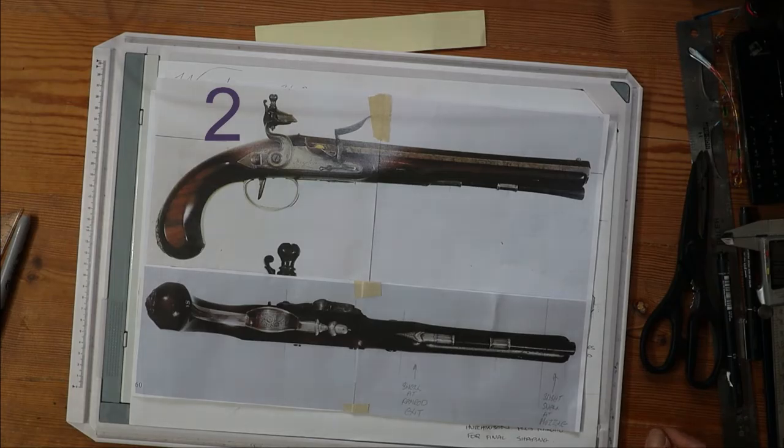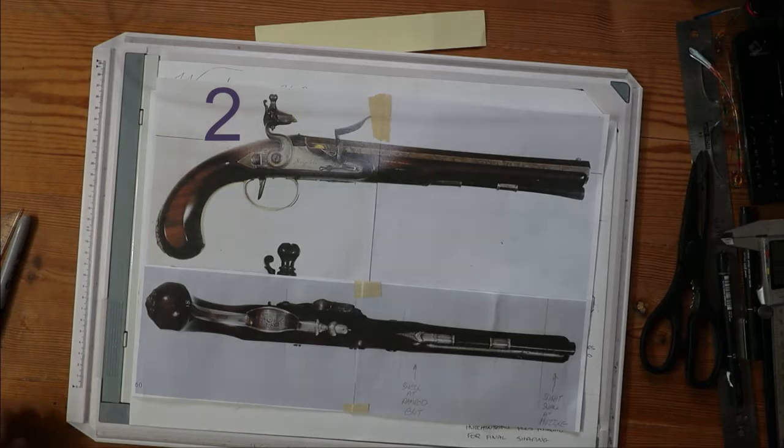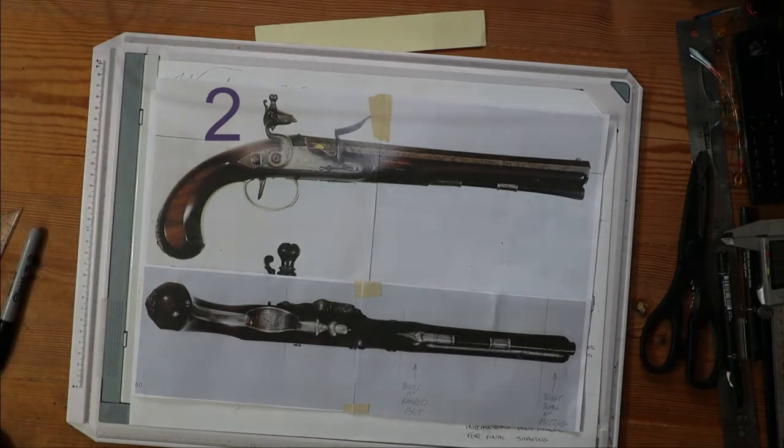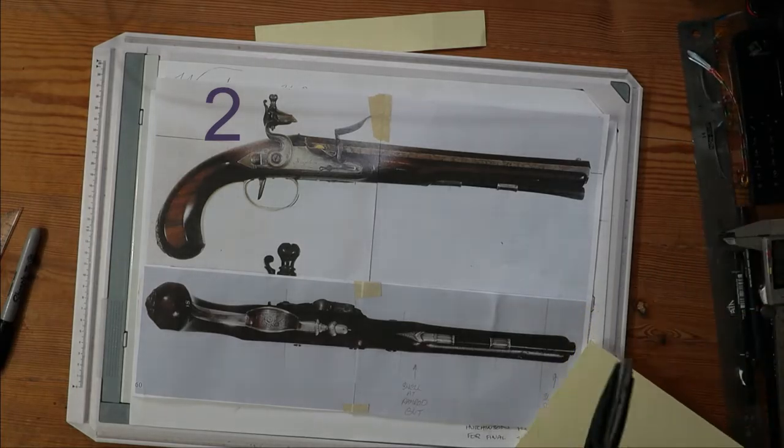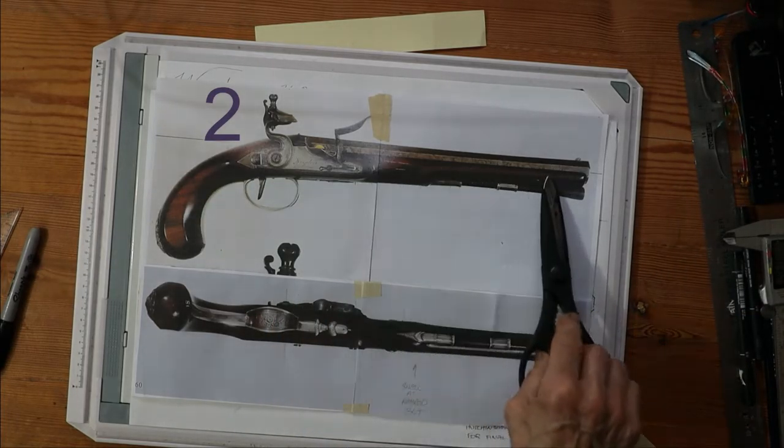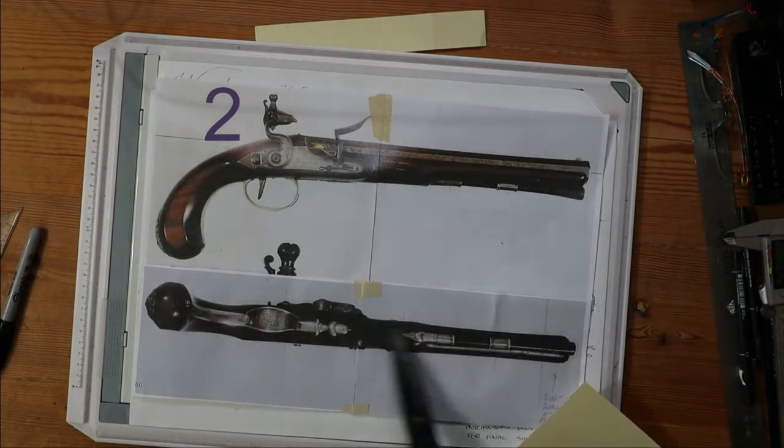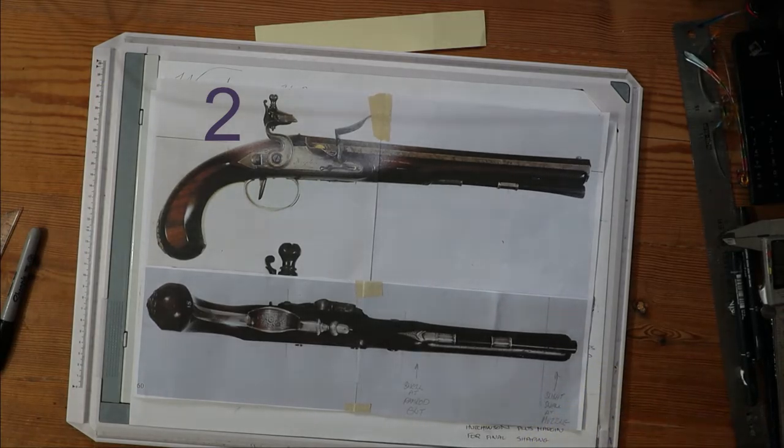I'm going to have a look now at one of the other jobs I've got to do, which is to fabricate the trigger guard. Now I'm planning to fabricate the trigger guard out of silver plate. So I've taken, in addition to the profile picture I took, I've taken an under view from the book.